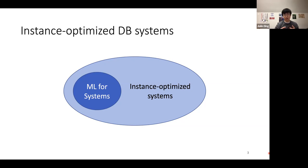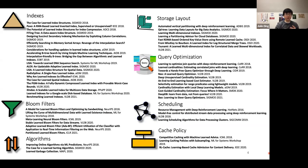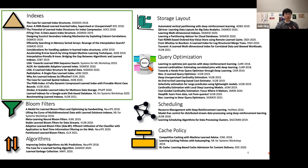I and others at MIT and elsewhere have started making a conscious effort to refer to our research as instance-optimized systems or components. Over the past few years, there's been a lot of work spanning topics from indexes to bloom filters, core database algorithms, storage layouts, query optimization, scheduling, and cache policies. Today I'll describe some work on learned indexes.